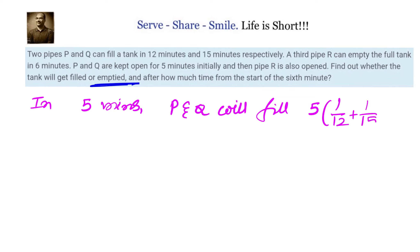That is equals to in 1 minute they will do 1 by 12 plus 1 by 15. We already checked that. That is nothing but 3 by 20. So in 5 minutes it will be 5 into 3 by 20 which is 15 by 20 that is equals to 3 by 4. That means P and Q in 5 minutes are filling 3 fourths of the tank.